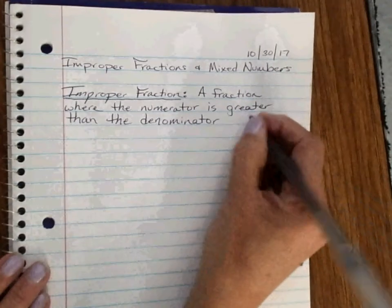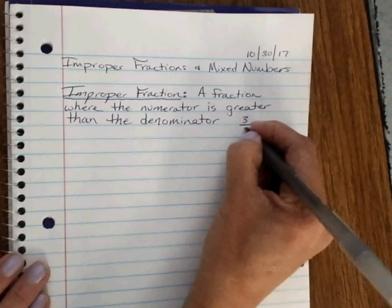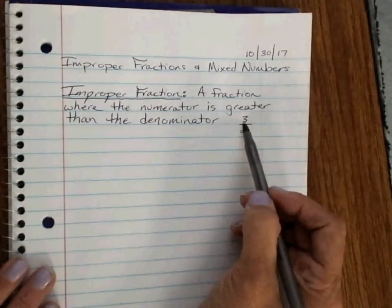For example, 3 over 2. That is an improper fraction. My numerator is greater than my denominator.